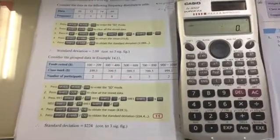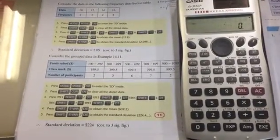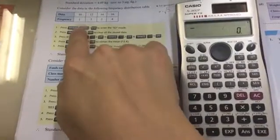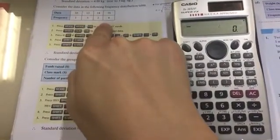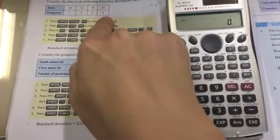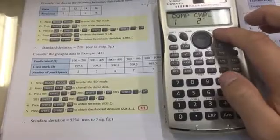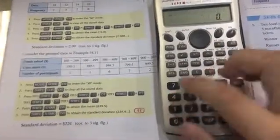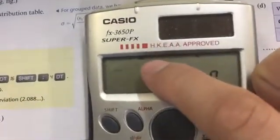In this video we are going to find the standard deviation from grouped data which is given by the table. First, press Mode, then Mode 1, and you will find a small letter SD at the top of the screen.